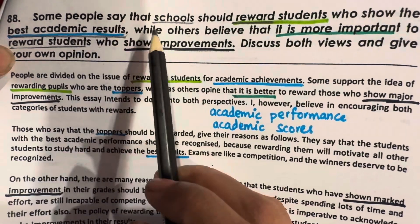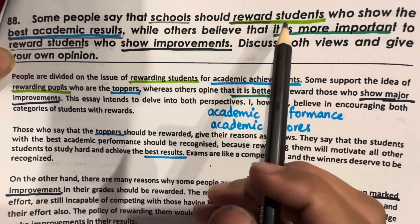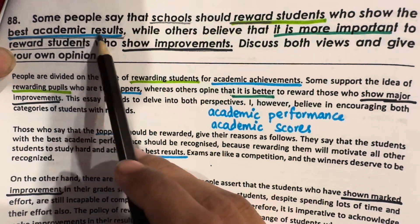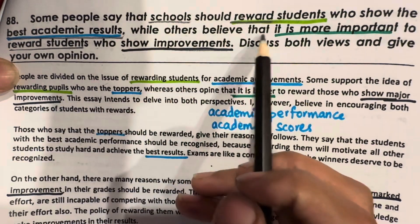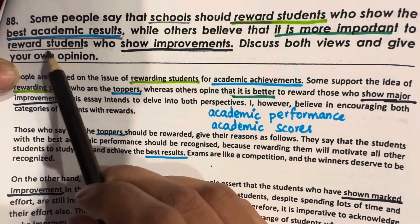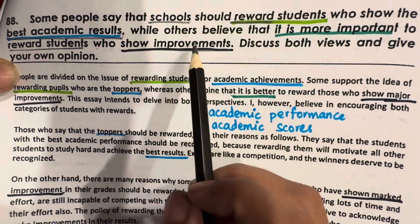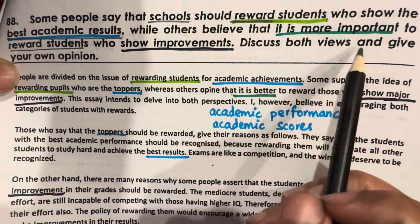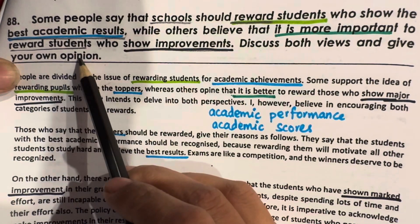Some people say that schools should reward students who show the best academic results, while others believe that it is more important to reward students who show improvements. Discuss both views and give your own opinion.